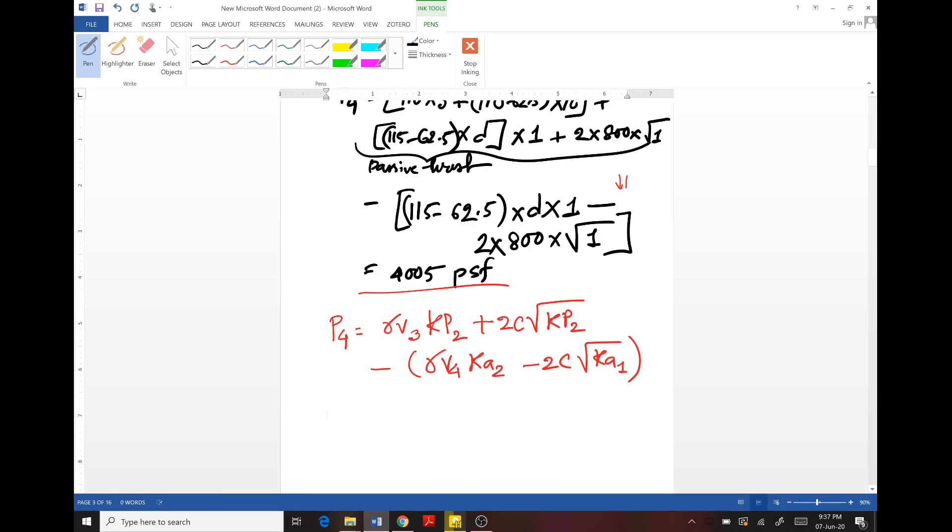So the previous problem we have solved up to P4. Now again we will write all the horizontal pressures: P1 was 125.4 psf, P2 was 305.9 psf, P3 was 2395 psf, and P4 was 4000 psf.